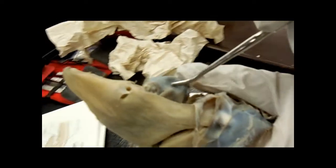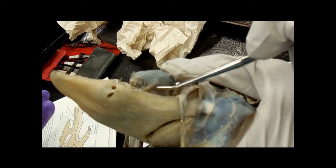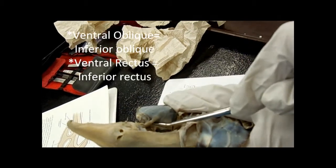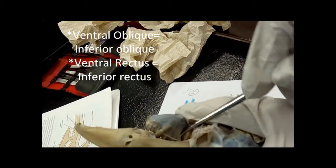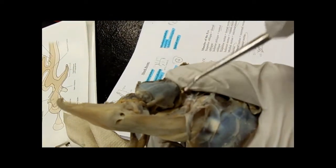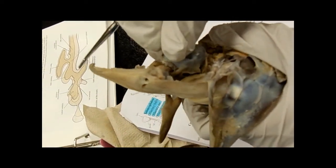You go under the eye, you get the, oh yeah, I tore it off here. You get this one, this is the ventral oblique, ventral rectus.